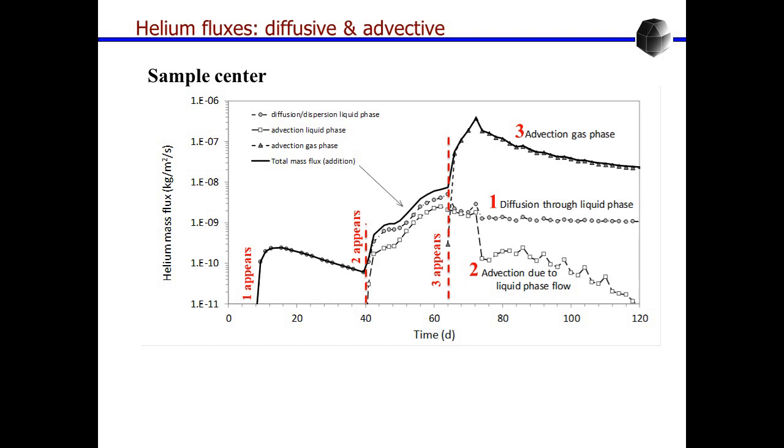At the beginning there is diffusion as I said, then there is some advection through the liquid phase as the water is displaced. And then in the third phase there is a formation of a gas phase and that gas phase permits the gas to flow by advection. As I said, this is by a preferential path.